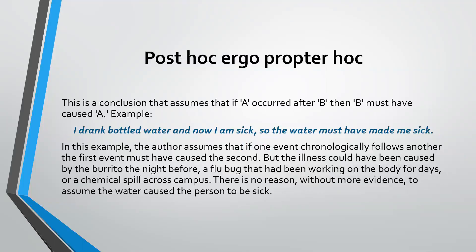Post hoc ergo propter hoc is a conclusion that assumes if A occurred after B, then B must have been caused by A — but that's not always the case. For example: I drank a bottled water and now I'm sick, so the water must have made me sick. Not necessarily, because we're missing information — perhaps there was a previous illness or other previous exposure.